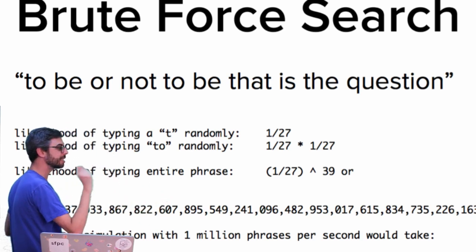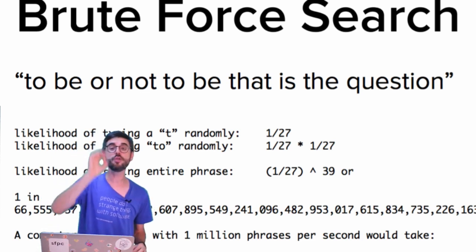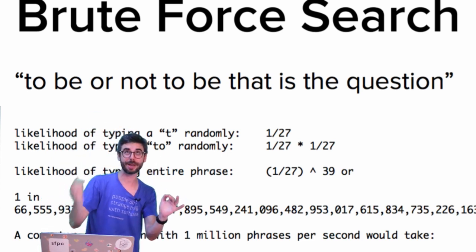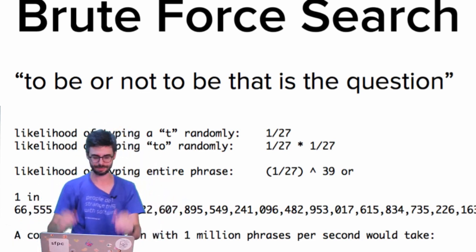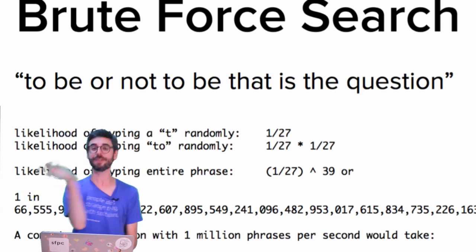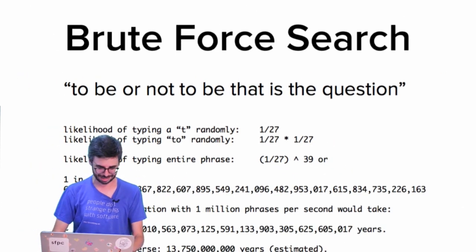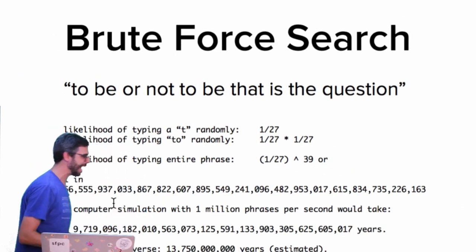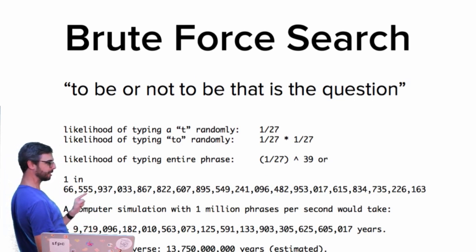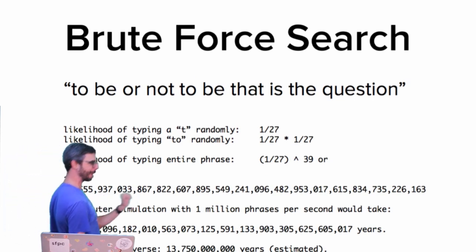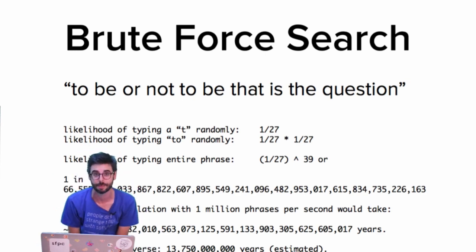That probability is one divided by 27 times one divided by 27, thirty-nine times. I did this math earlier, and the actual answer is one in 66-something — a really massively unfathomable number.